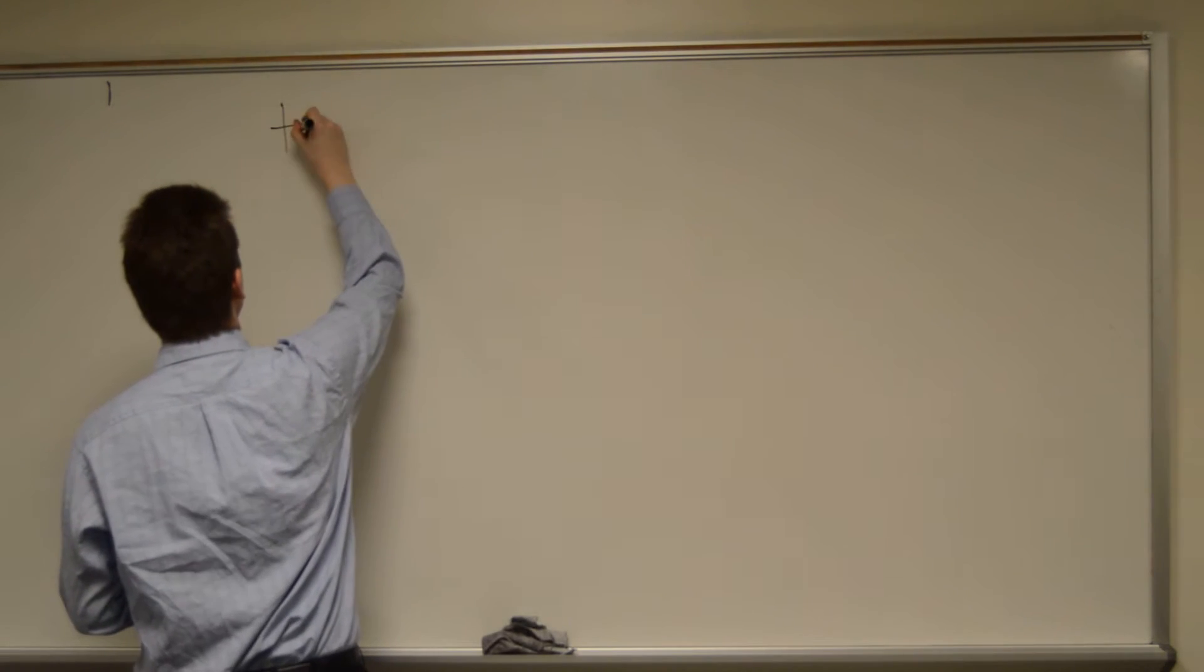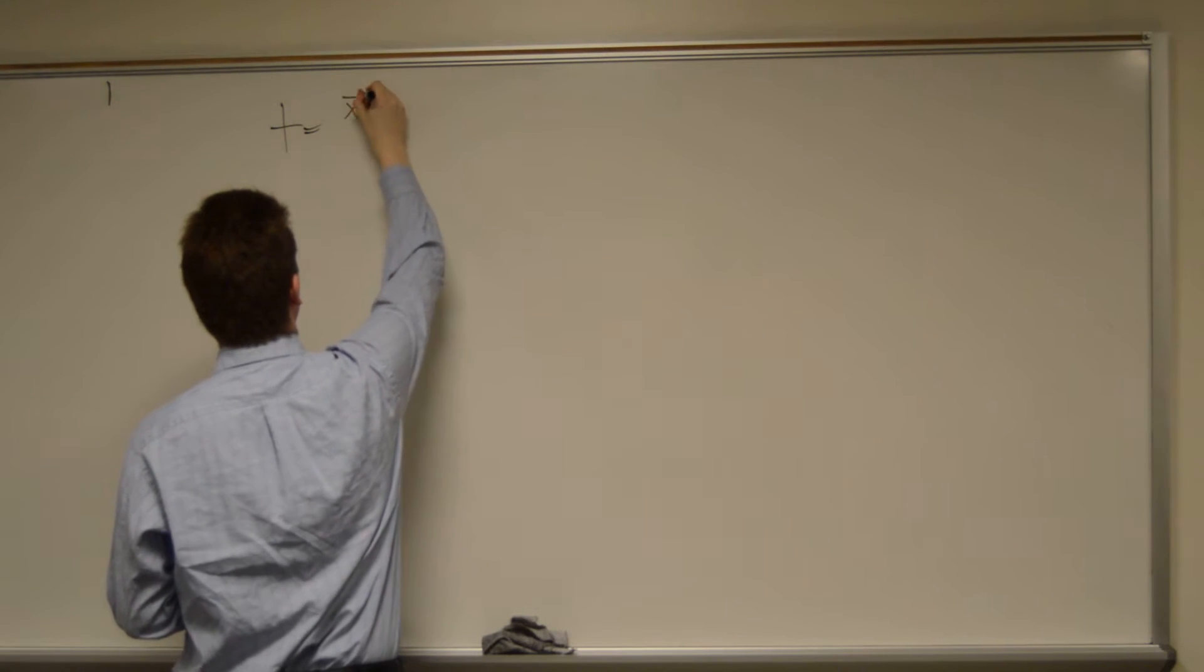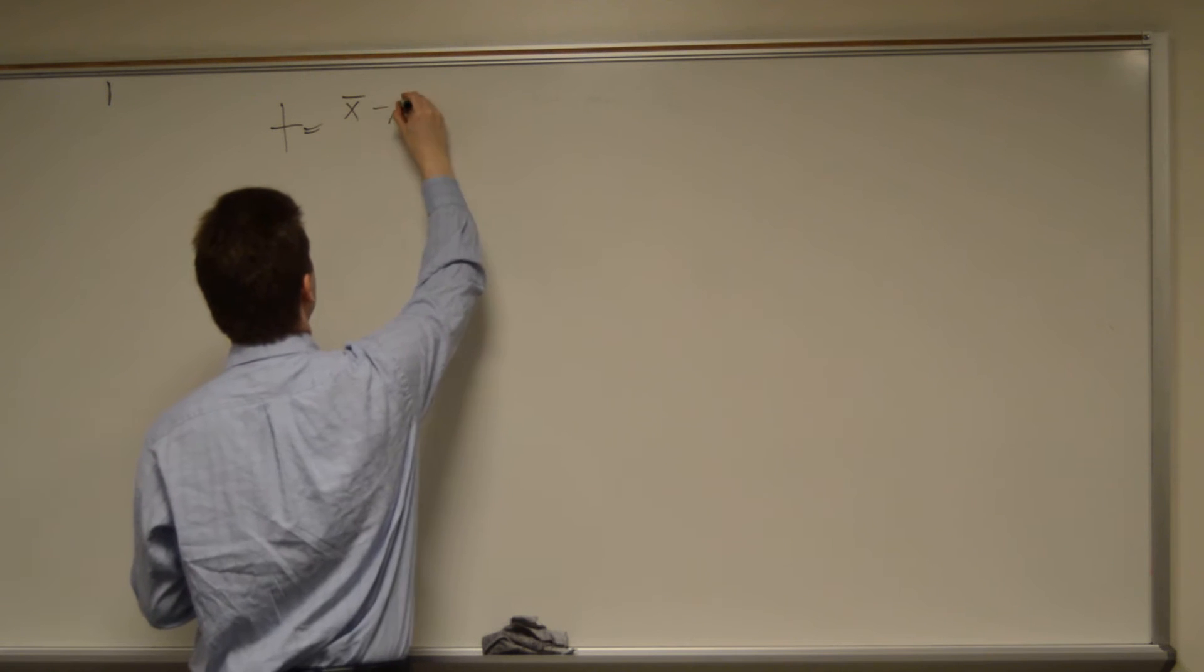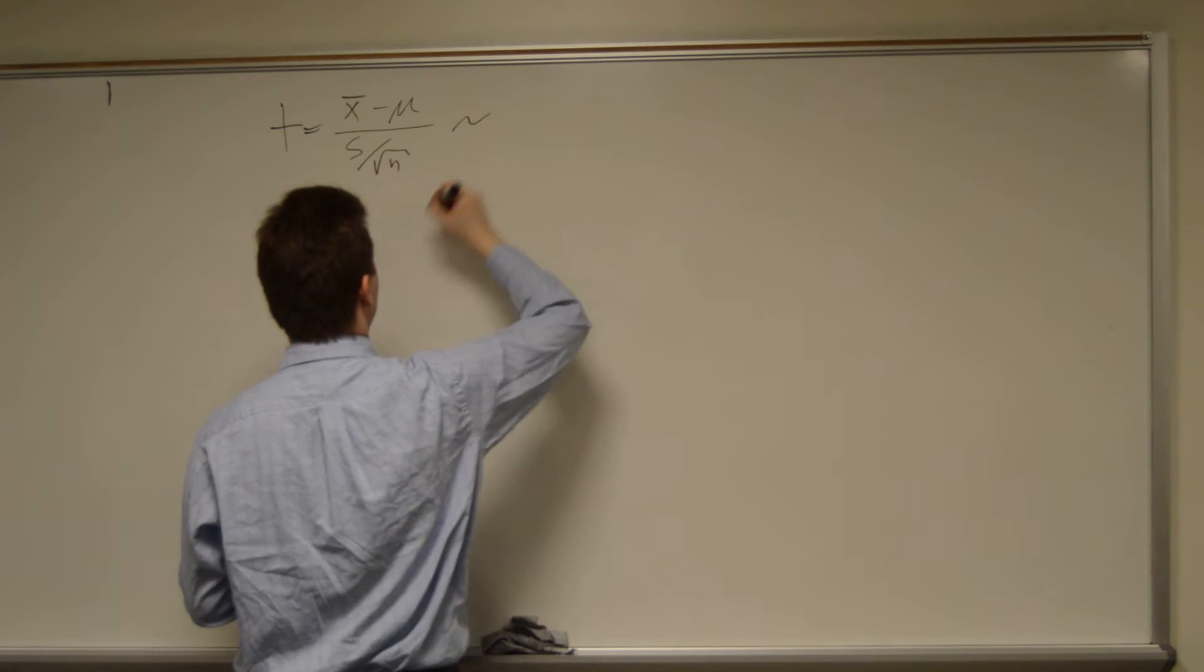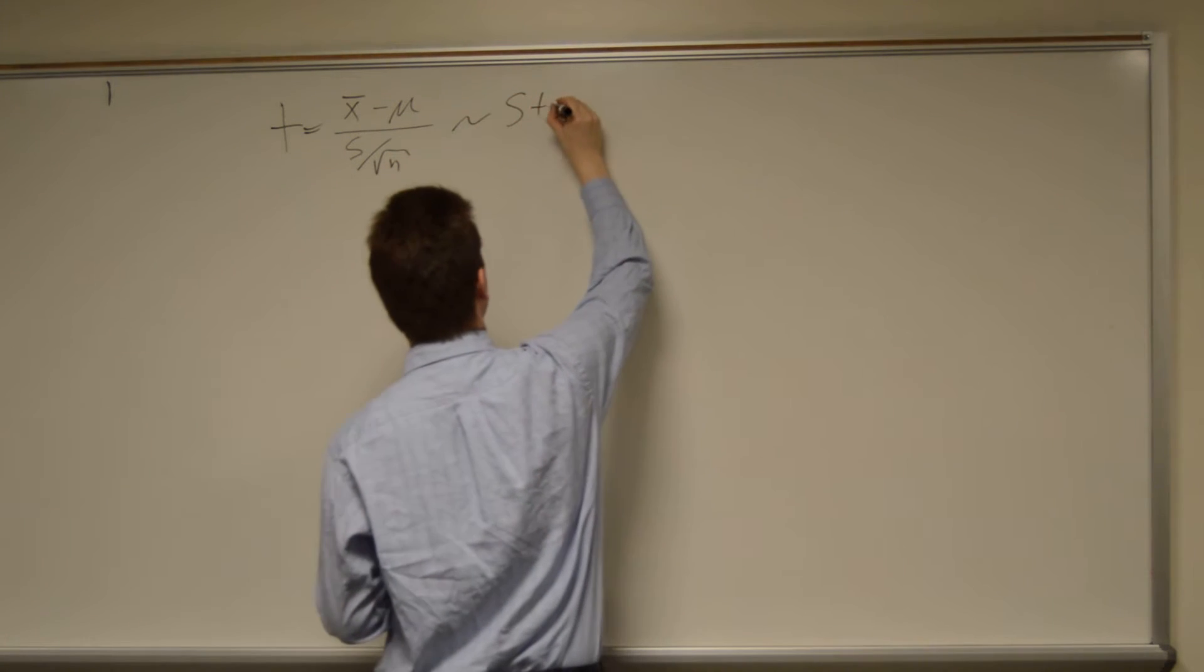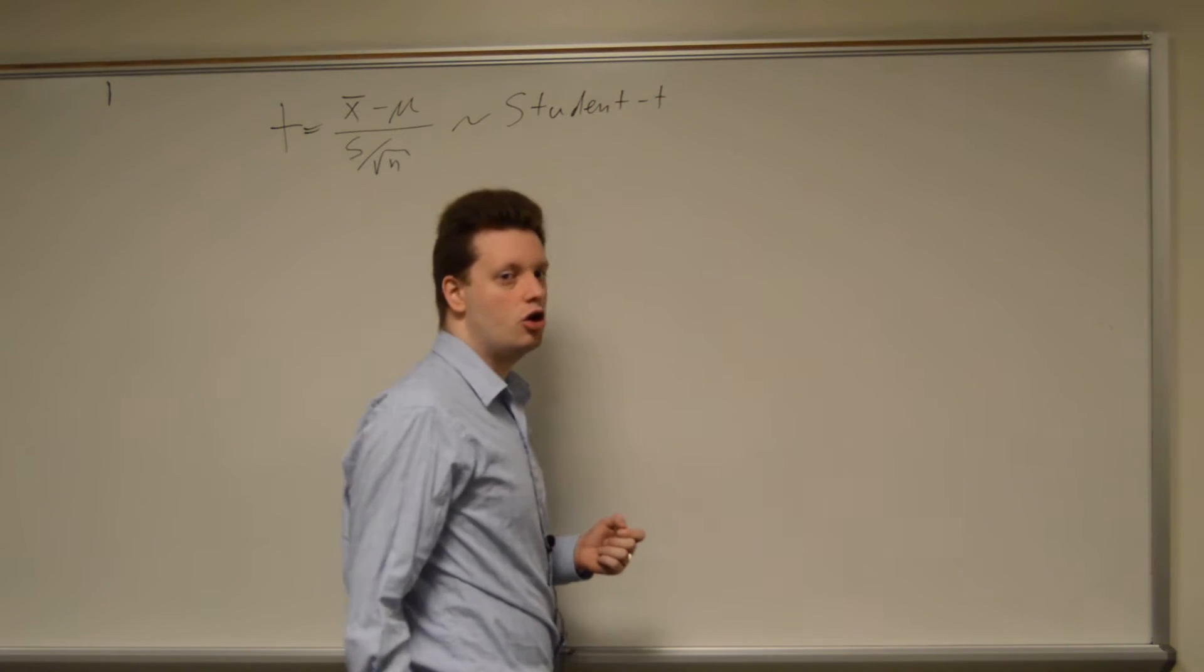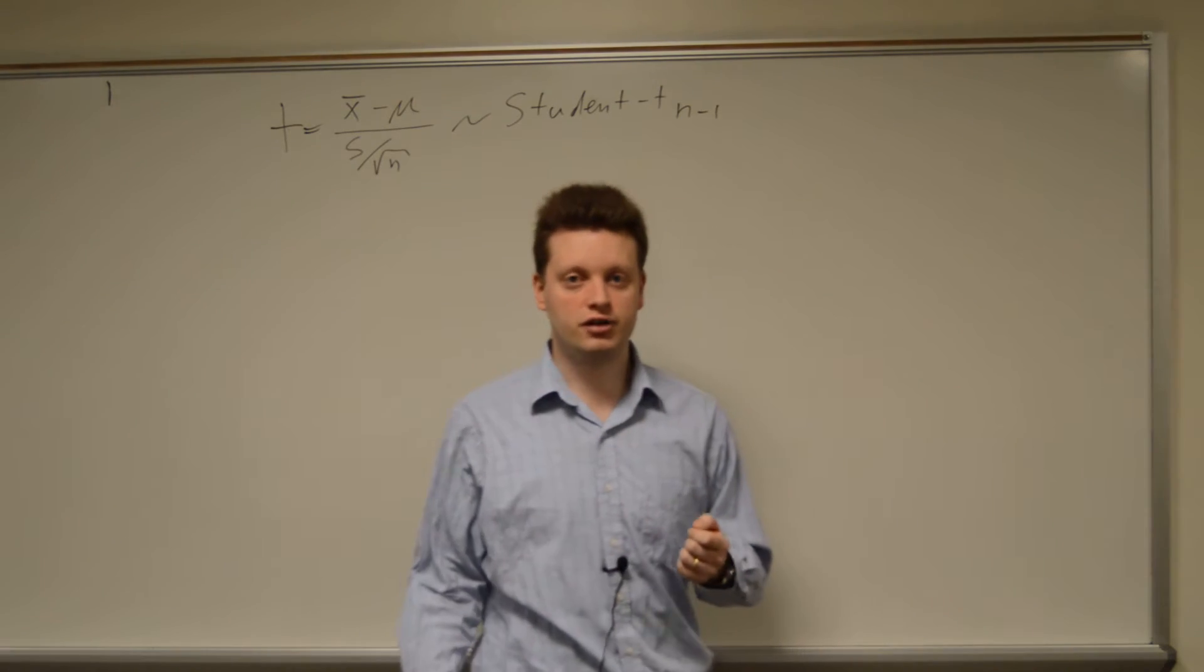The t-statistic is equal to x-bar, which is our estimated mean, minus mu over s over square root of n and is approximately student t distributed with n minus 1 degrees of freedom.